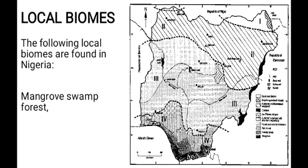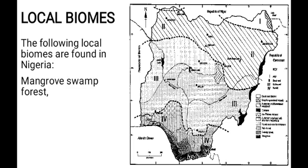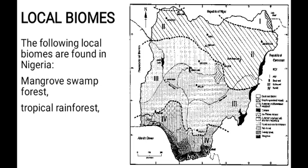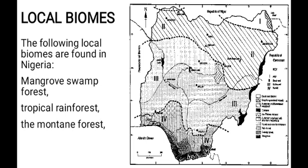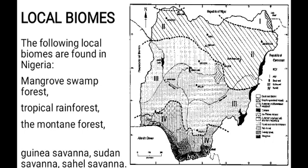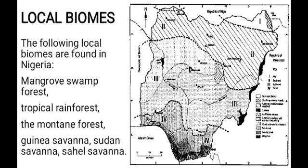The following local biomes are found in Nigeria: number one is mangrove swamp forest, number two is tropical rainforest, another one is the mountain vegetation or mountain forest, and we have the savannas which can be divided into Guinea savanna, Sudan savanna, and Sahel savanna.